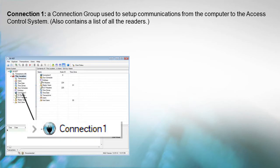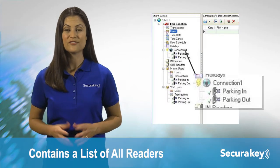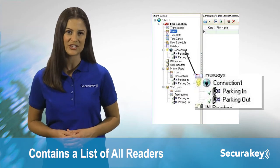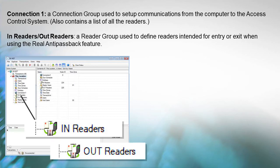Connection 1 is a connection group which is used to set up communications from the computer to the access control system. It also contains a list of all the readers in that entire connection group. In Readers and Out Readers: This is a reader group which is used to define readers intended for entry or exit when using the real anti-passback feature.